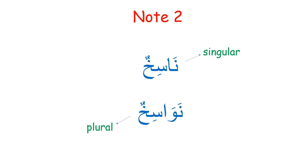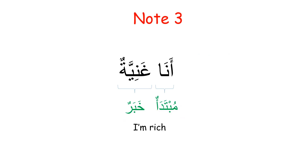Note two: inna and its sisters are also known as nawaasiikh, and each sister is known as naasikh — for example, an-naasikh inna or an-naasikh la'alla. The term naasikh is derived from a word meaning 'changing the declension,' i.e., the case ending. Since we've seen how inna and its sisters change case endings, this denomination makes perfect sense.